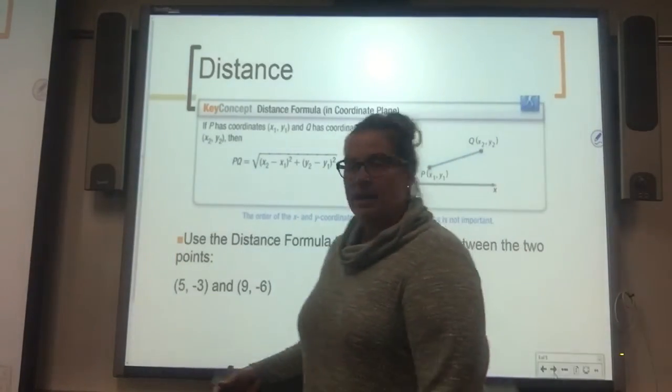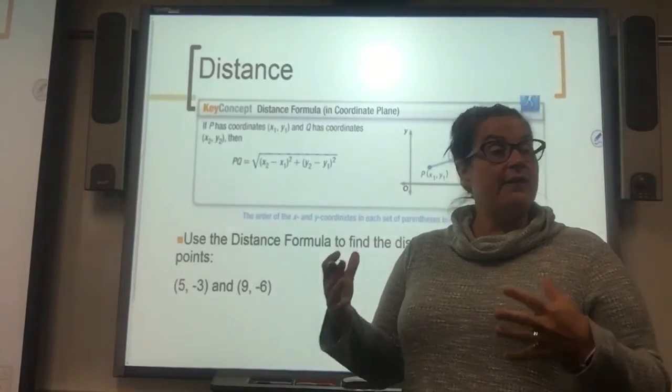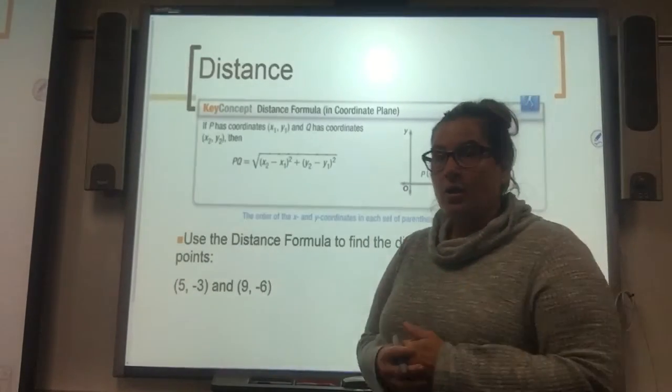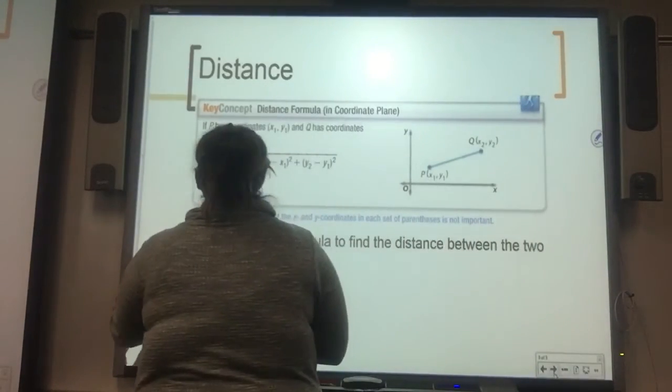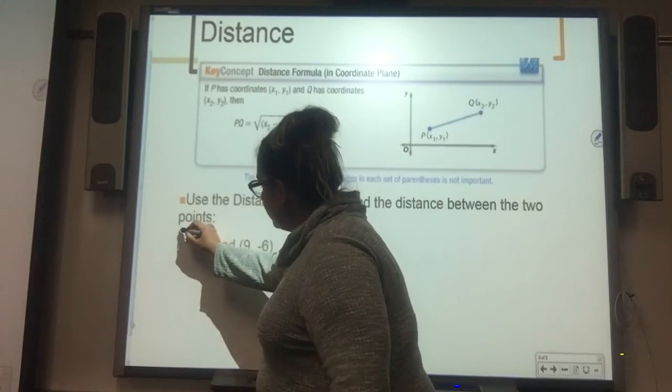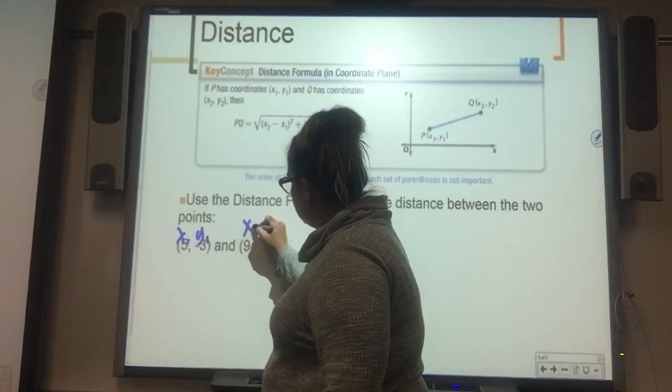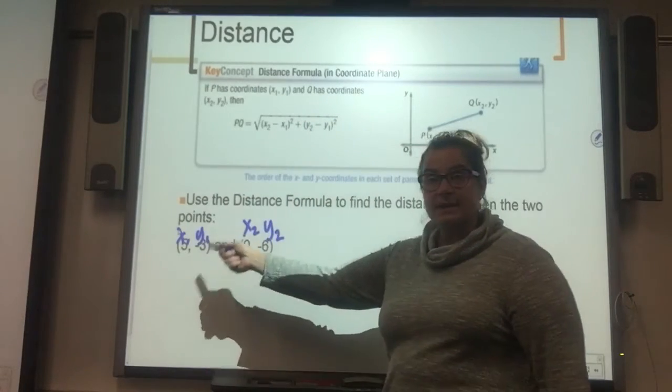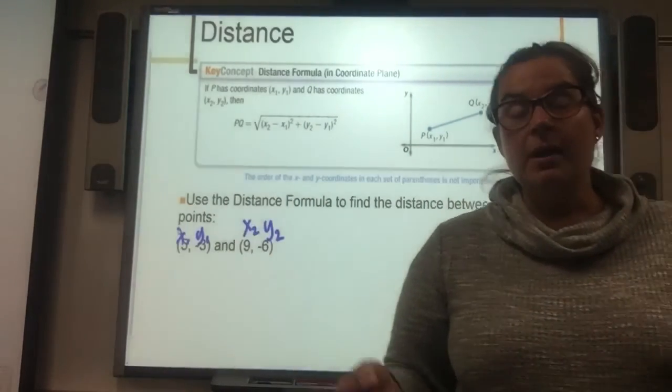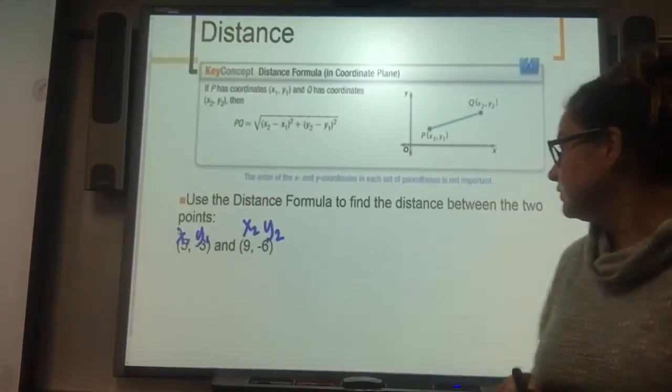When I do this, and it might have been taught differently or you might have a different structure and that's okay, I label first what each of my points represent. So I know my x sub 1, my y sub 1, my x sub 2, and my y sub 2.